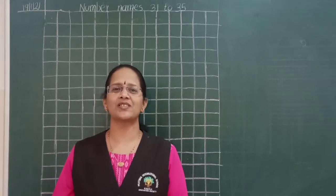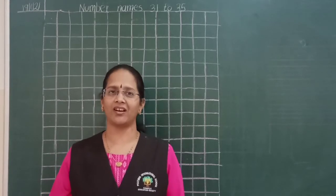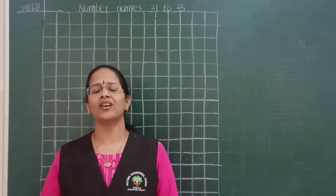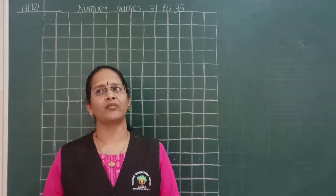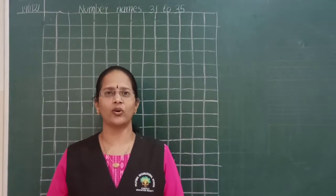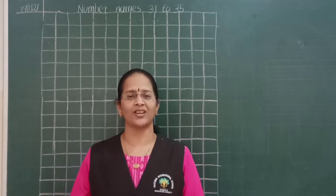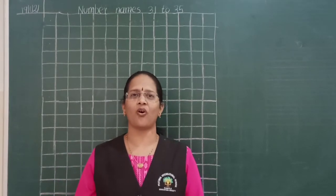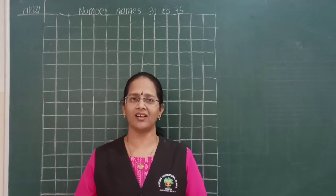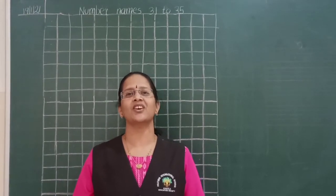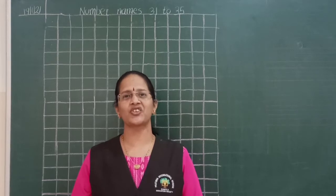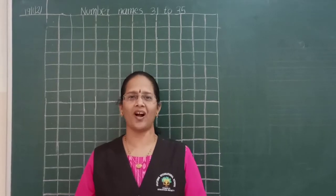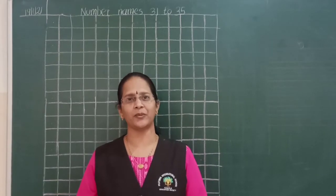Now you know the spelling of 30. In my last video we wrote numbers up to 30, so we know the spelling of number 30. That is T-H-I-R-T-Y, 30.